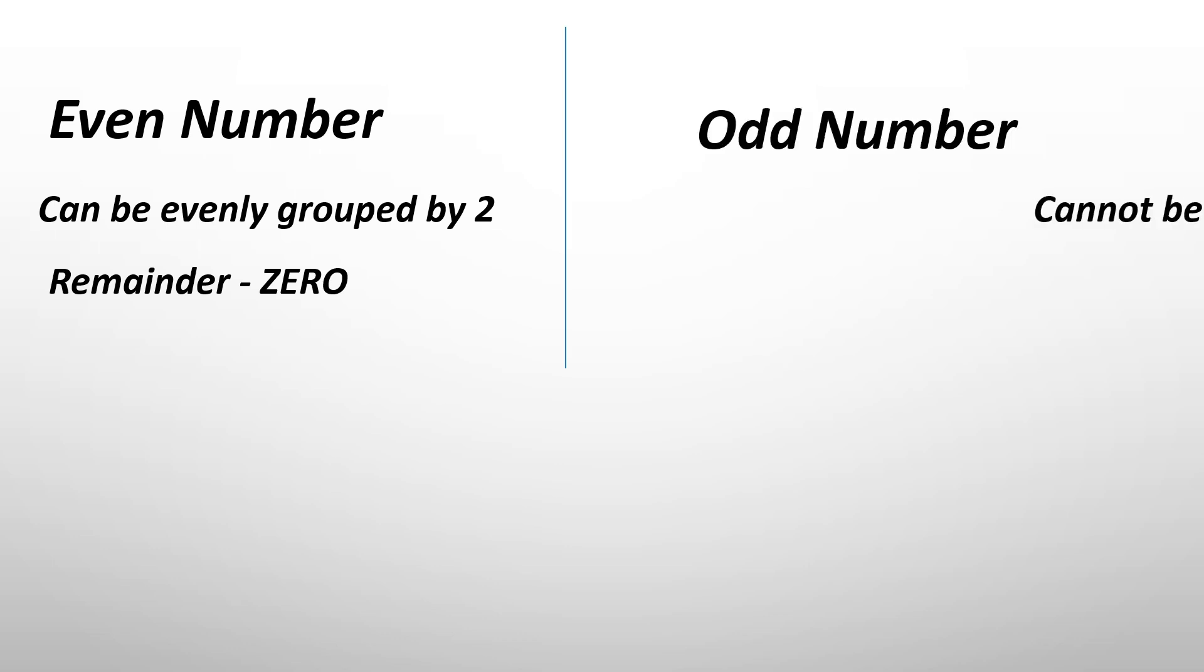So even numbers can be split by two evenly and the remainder will be zero. But odd numbers on the other side cannot be evenly grouped by two and the remainder will be one.